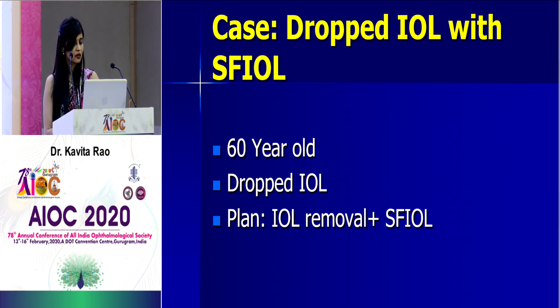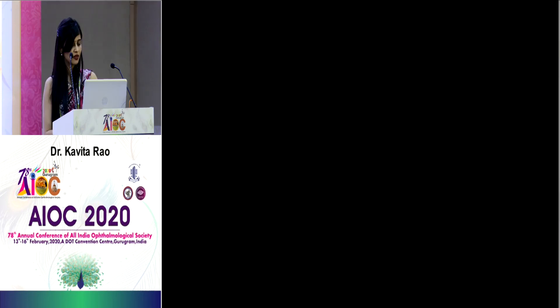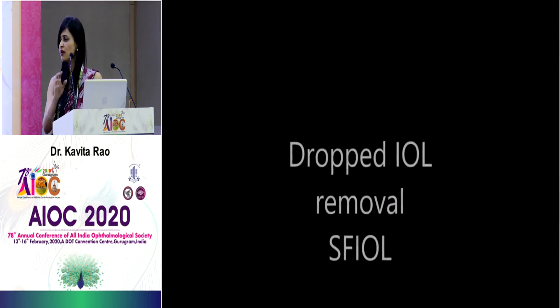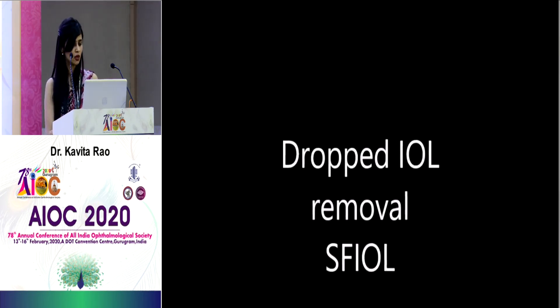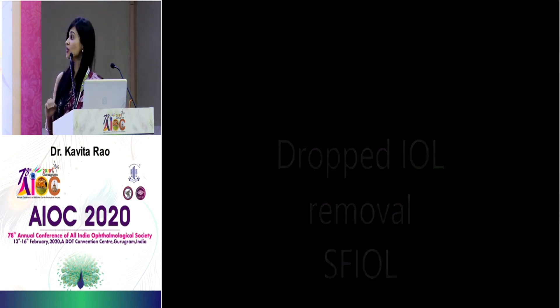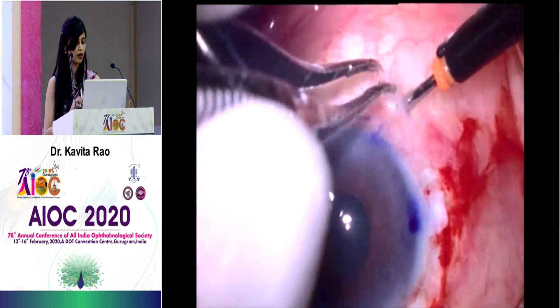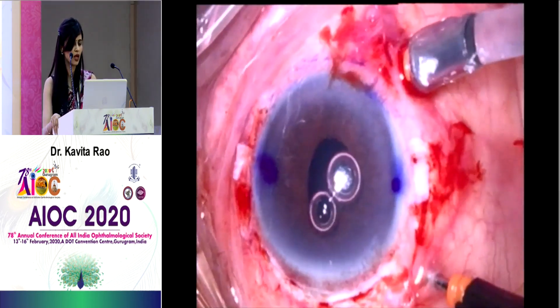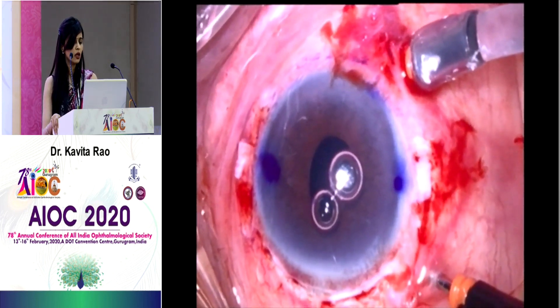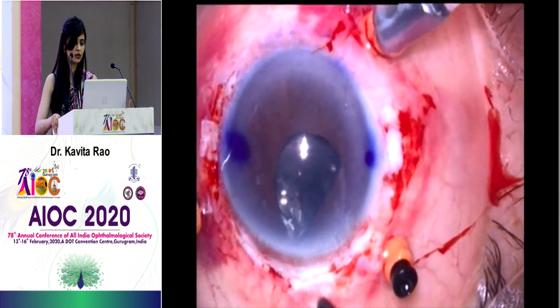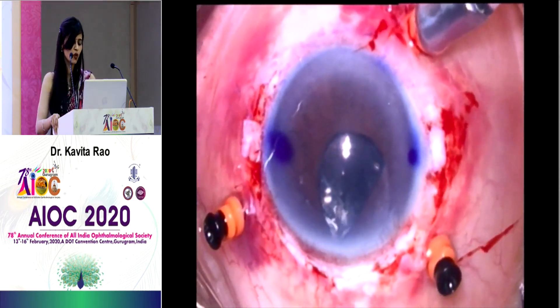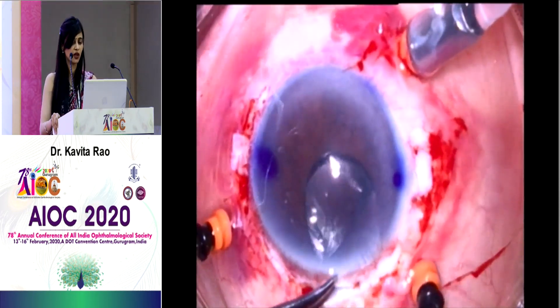The next case is another dropped IOL, again planned as an SFIOL. The IOL was grasped and removed, and I performed a four-point fixation SFIOL. For those doing planned SFIOL without three vitrectomy ports, a tip would be to use an anterior chamber maintainer so you don't constantly need to add viscoelastic.